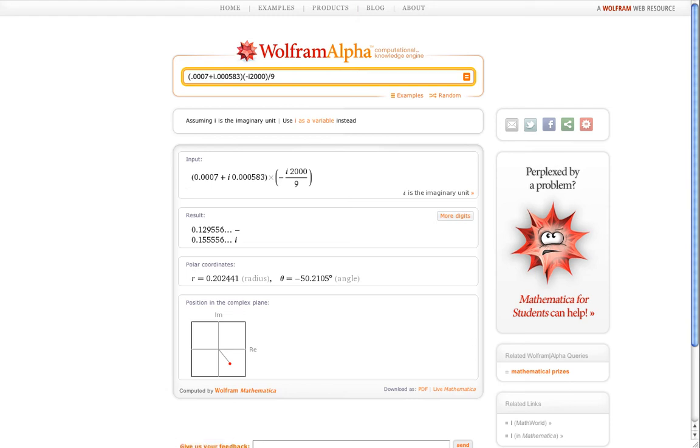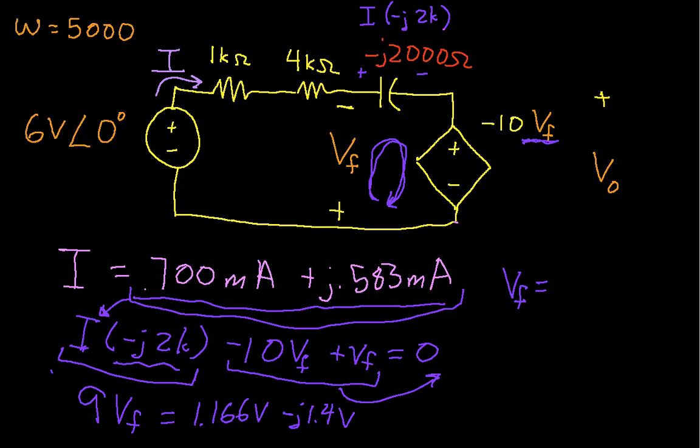To this value. And we plug this back in. So we have Vf is 0.130 minus J times 0.156. And these are both volts.